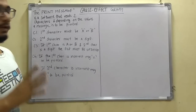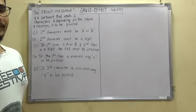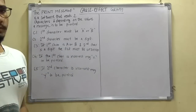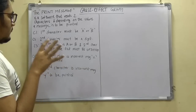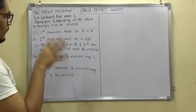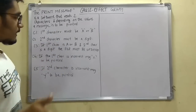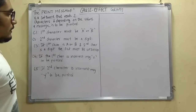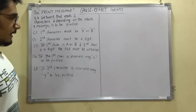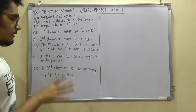Some conditions are laid out. The first condition is that the first input character must be 'a' or 'b' — it should be an alphabet. The second condition is that the second character must be a digit. The third condition is that if the first character is 'a' or 'b' and the second character is a digit, then the file must be updated. If the first character is incorrect, message X is printed; if the second character is incorrect, message Y is printed.